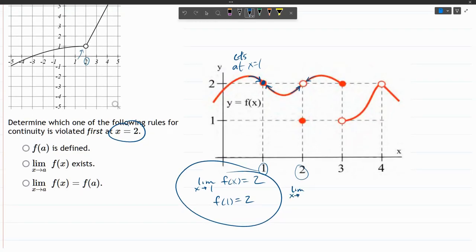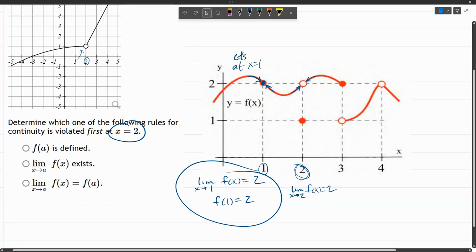So this is limit as x approaches, now the x value is approaching two, f of x equals this two that I just wrote is the y value that both of them are approaching. So the limit exists.